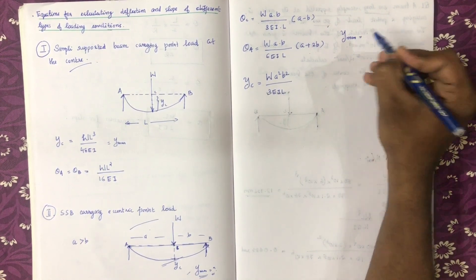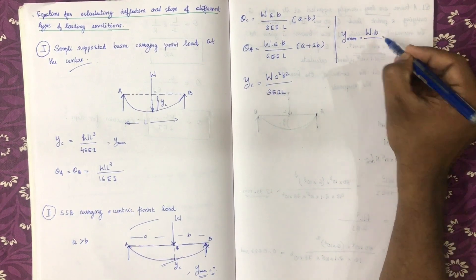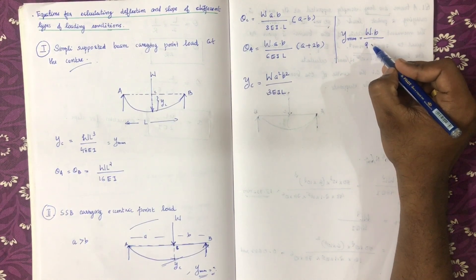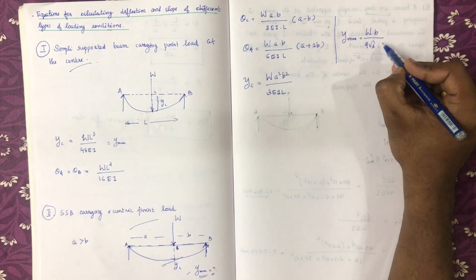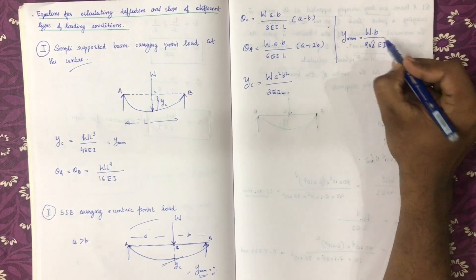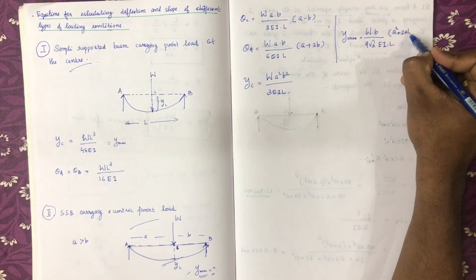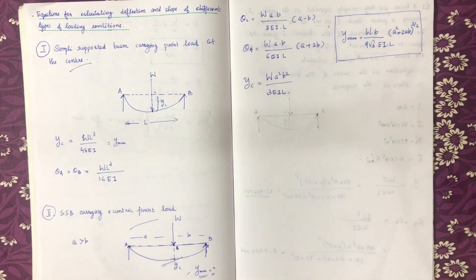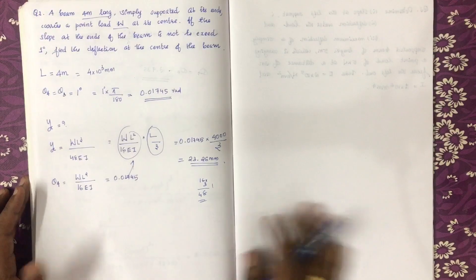Ymax, the maximum deflection, is equal to W·b divided by 9√3·E·I·L, multiplied by (A² + 2AB + B²) raised to the power of 3/2. Learn how to apply this formula carefully.